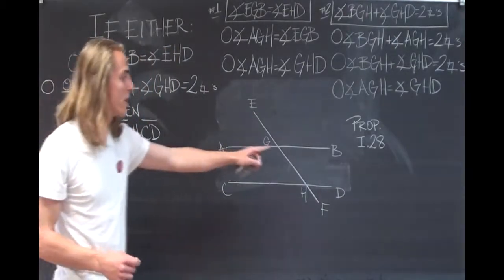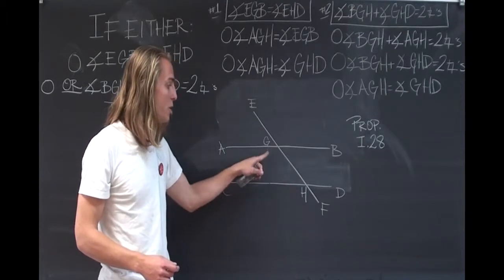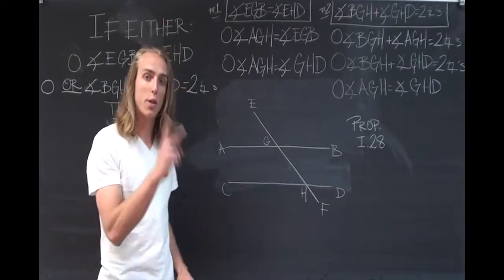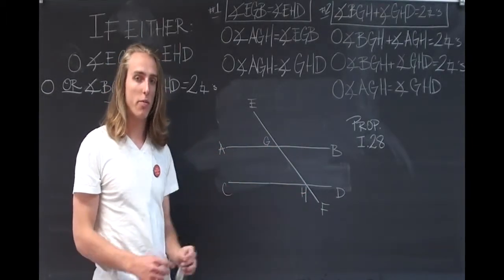or if the same side interior angles, BGH and GHD, add up to two right angles, then the lines AB and CD will be proved parallel.